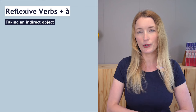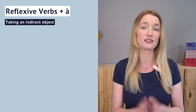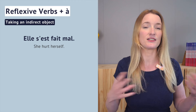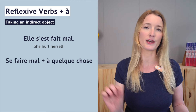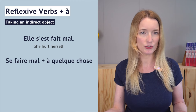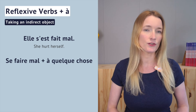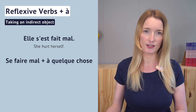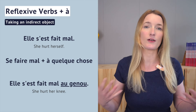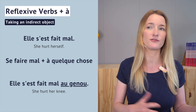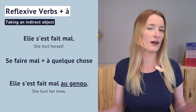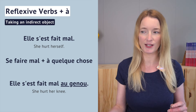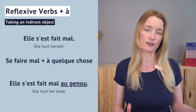The very specific exception is that this rule doesn't work with reflexive verbs taking an indirect object. For example, the verb 'se faire mal à quelque chose' takes an indirect object, so it's not going to agree. 'Elle s'est fait mal au genou' — 'elle s'est fait mal à quoi?' — 'au genou'. No matter what, the past participle 'fait' will never agree in gender and number.